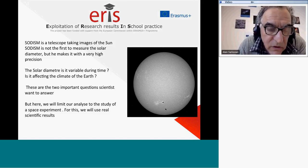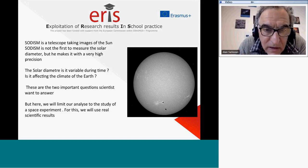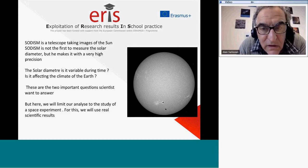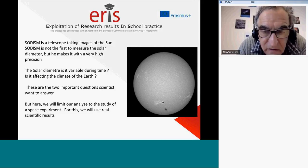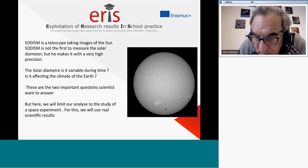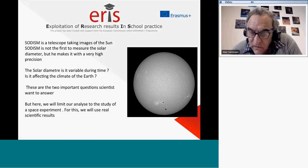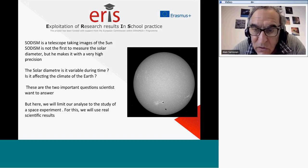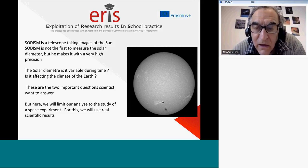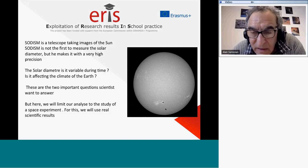We are observing Venus during a transit. How can we interpret the parameters that we can measure, observe, and understand with the SODIISM telescope? At the end of the project, we will try to see if we have understood all these parameters, with a quiz at the end.